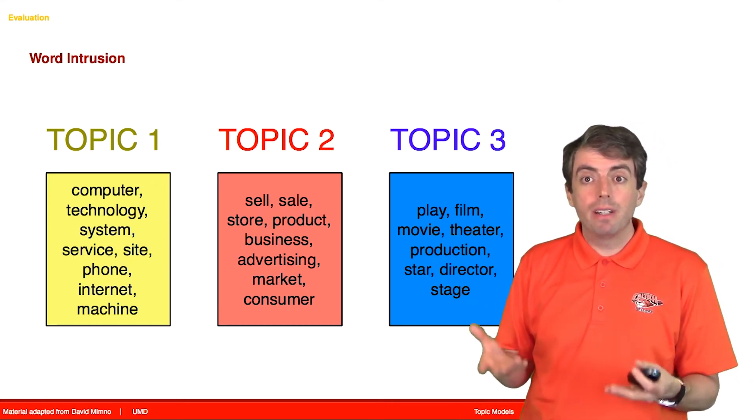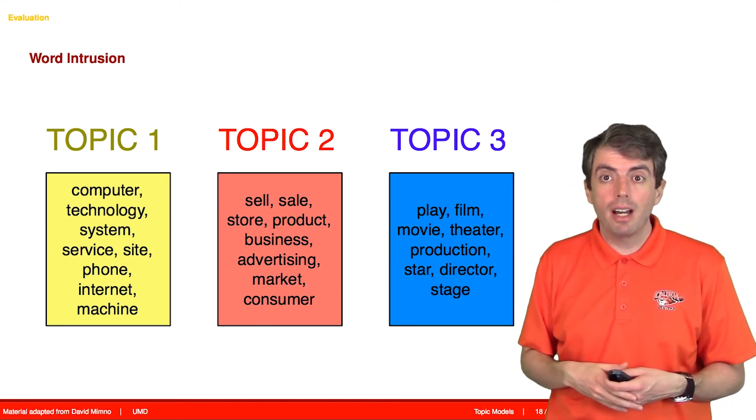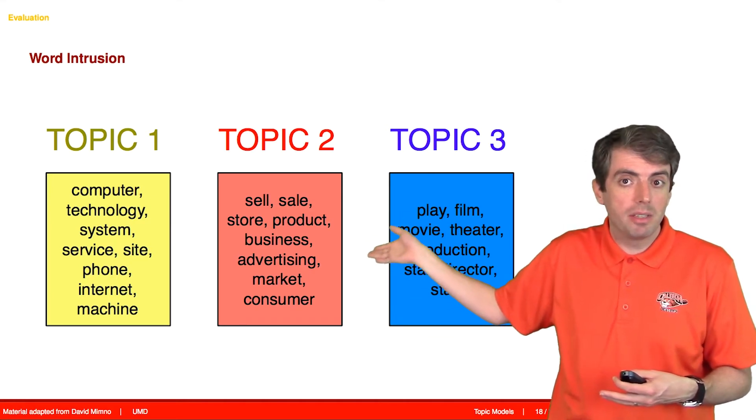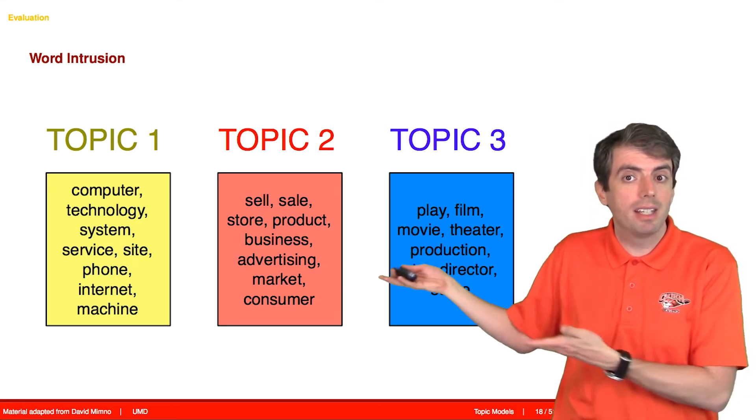By looking at these, you can figure out that these are three of the most important things talked about in the New York Times. And if you're interested in one of these things, you can look at the documents associated with that and get a better idea of what the New York Times had to say about, say, the arts.